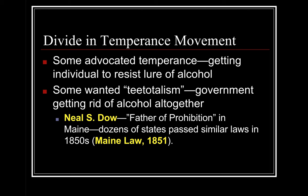There was a divide within the temperance movement: some advocated for temperance — reducing the urge to drink — while others wanted teetotalism, where the government would eliminate alcohol altogether. Neal S. Dow was the father of prohibition in the state of Maine, and many other states passed similar laws. Prohibition meant the outlaw of manufacturing, selling, and consumption of alcohol.